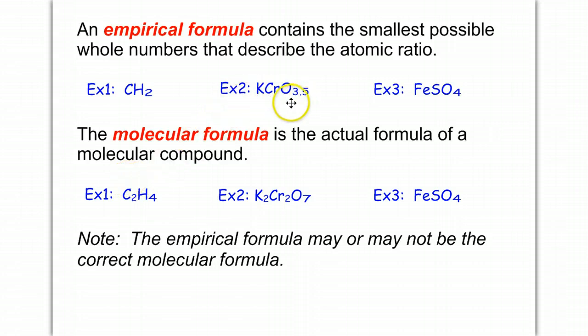In example 2, if this is the empirical formula, notice that 0.5 - we can't have a 0.5 in a compound. However, to get rid of halves you multiply by 2. So this compound ends up getting doubled, and we get K to K2, Cr to Cr2, O3.5 becomes O7.